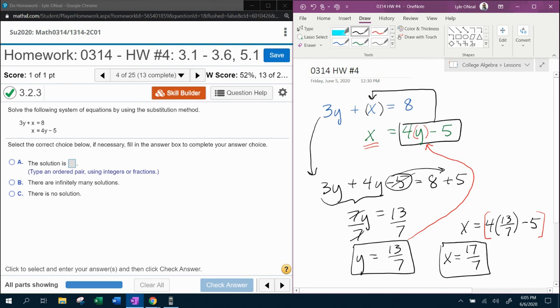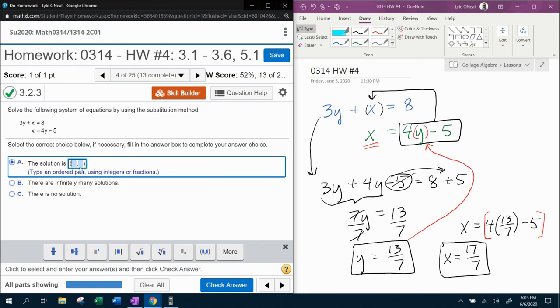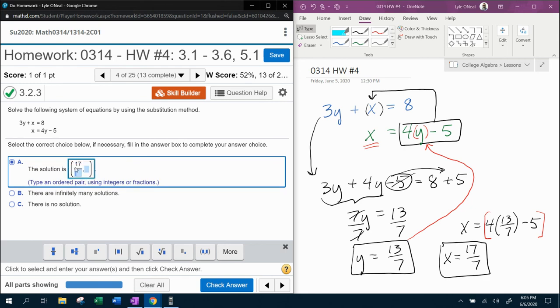And now we know the point of intersection. We have our ordered pair, so let's come check it. The solution of the system is, and remember x has to go first, so that's going to be 17 sevenths and 13 sevenths. Check it. Bam.